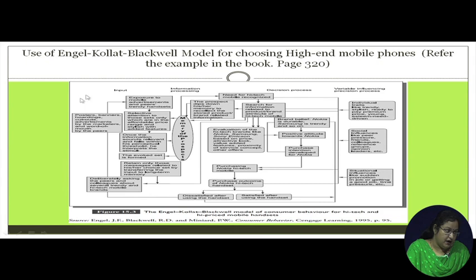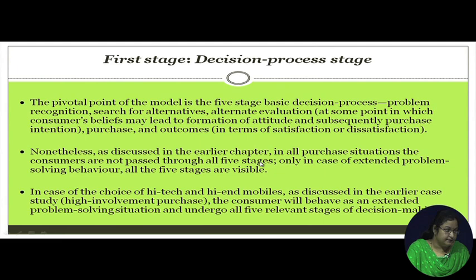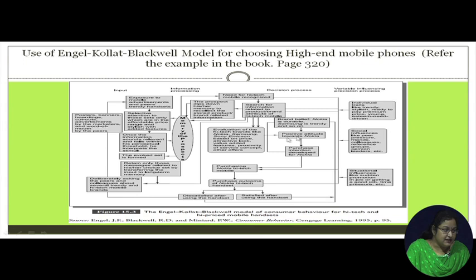One part is the input part, from where information flows to the customer. The second is the information processing part. The third is the decision making part — how to take a decision after processing the information. And these are the exogenous variables which have implications on the decision making process. We will start from the central part, the decision making process, and move in both directions.